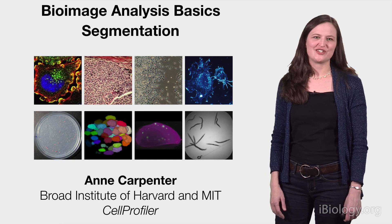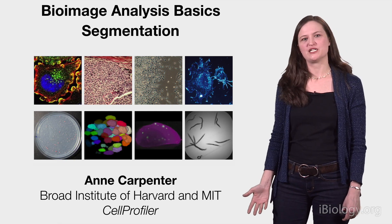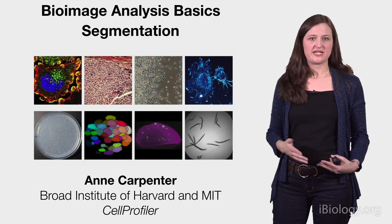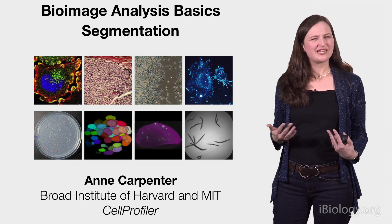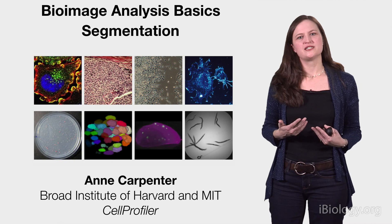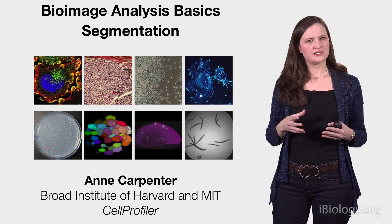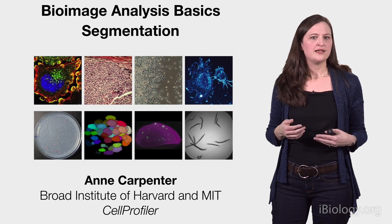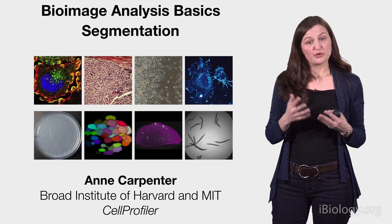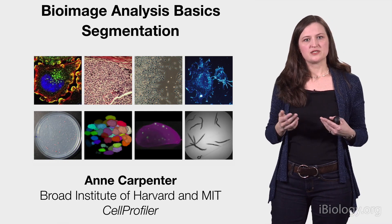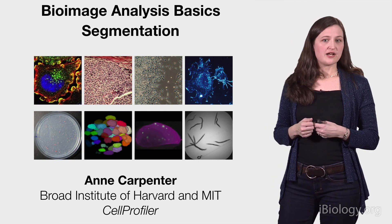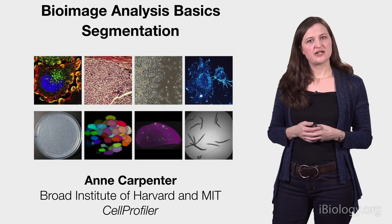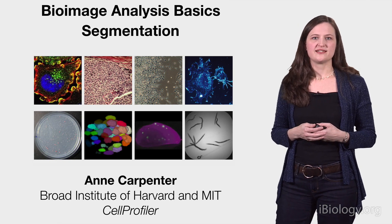Sometimes you can answer your biological question of interest by measuring properties of the entire image, such as the total amount of fluorescence or the texture or smoothness of staining across the entire field of view. But that's fairly rare. Usually, you're going to need to measure individual biological entities within the image, and those entities can be things like nuclei, cells, synapses, vesicles. They could be regions of organisms or tissue samples or colonies growing on a plate. Segmentation is the process of identifying individual cells or structures within the image, and for most bioimage analysis workflows, segmentation is a key step.